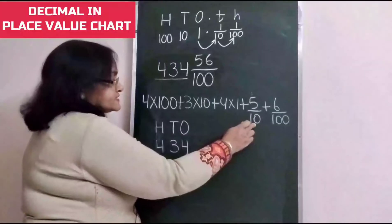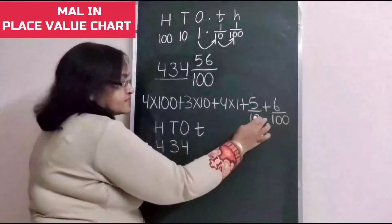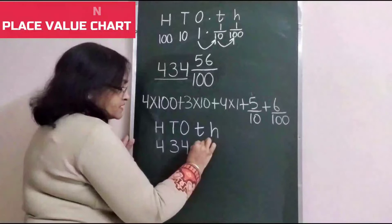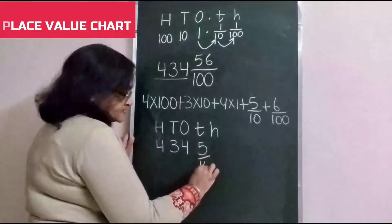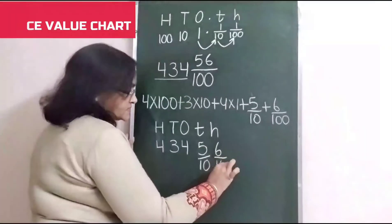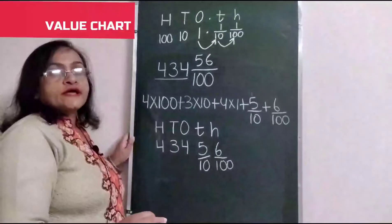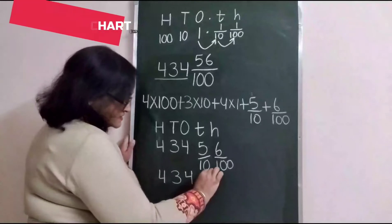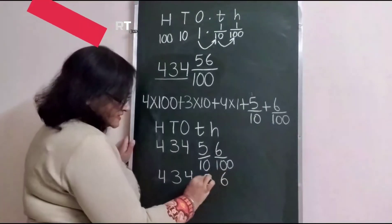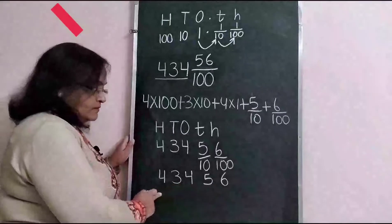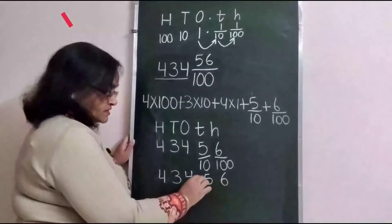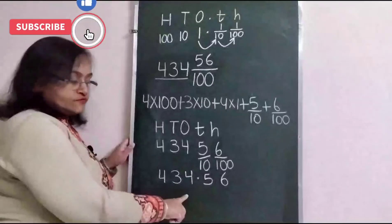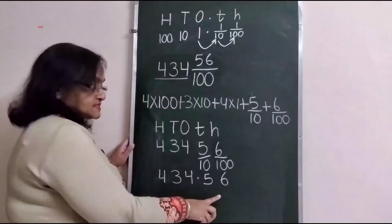Now, 5 tenths — we will write small t, and 6 hundredths — we will write small h here. So 5 will come under tenths and 6 under hundredths. We can also write it as 4 hundreds, 3 tens, 4 ones, and here 5 and 6. We separate the whole number and the fractional numbers with the decimal point. This means 434 and 56 hundredths, and in decimal form we write 434.56.